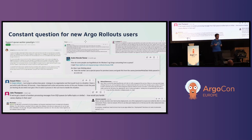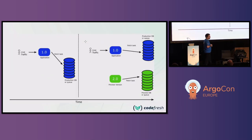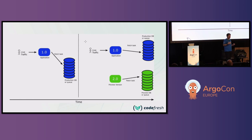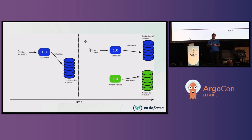People saw this and said ArgoRollouts doesn't work with stateful services — this has been one of the most popular questions this year. The solution is: when you start the new version, create a brand new database or queue just for that version. Production stays untouched; live users continue using version 1.0 and the production database. Your new application goes to a preview database, which you can populate with custom test data for smoke tests, QA tests, or manual tests, before deciding it's ready.